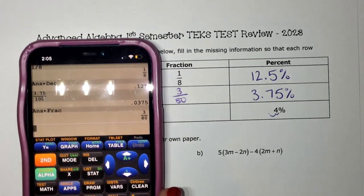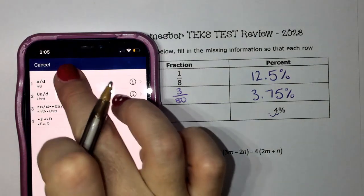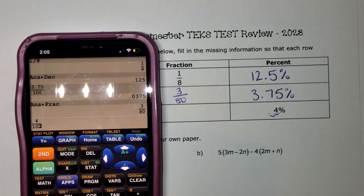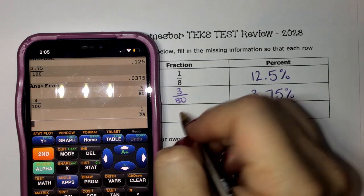And then to turn it into a fraction, I could do alpha y equals enter, 4 over 100. Because remember, it's percent over 100, and it's 1 over 25.